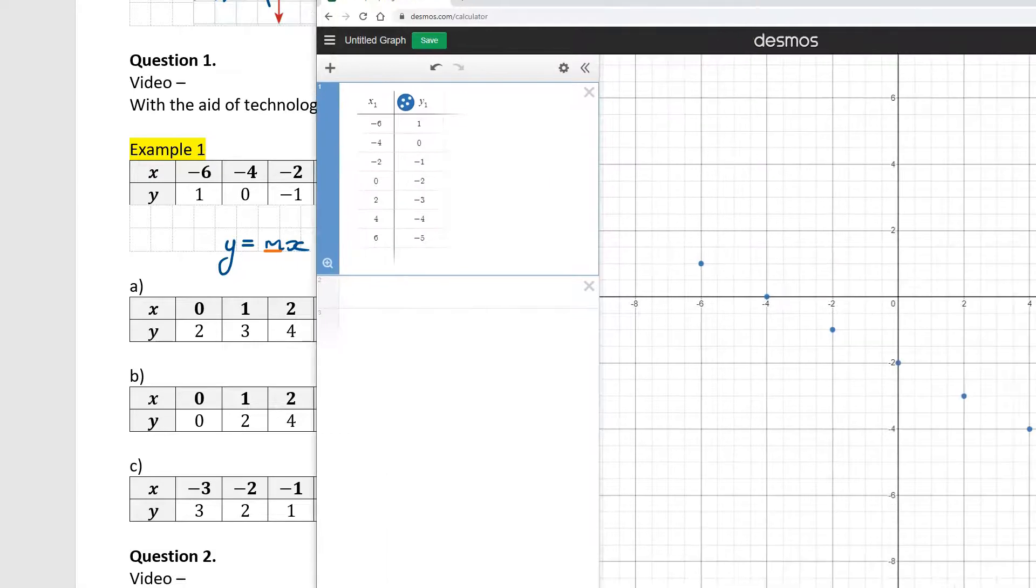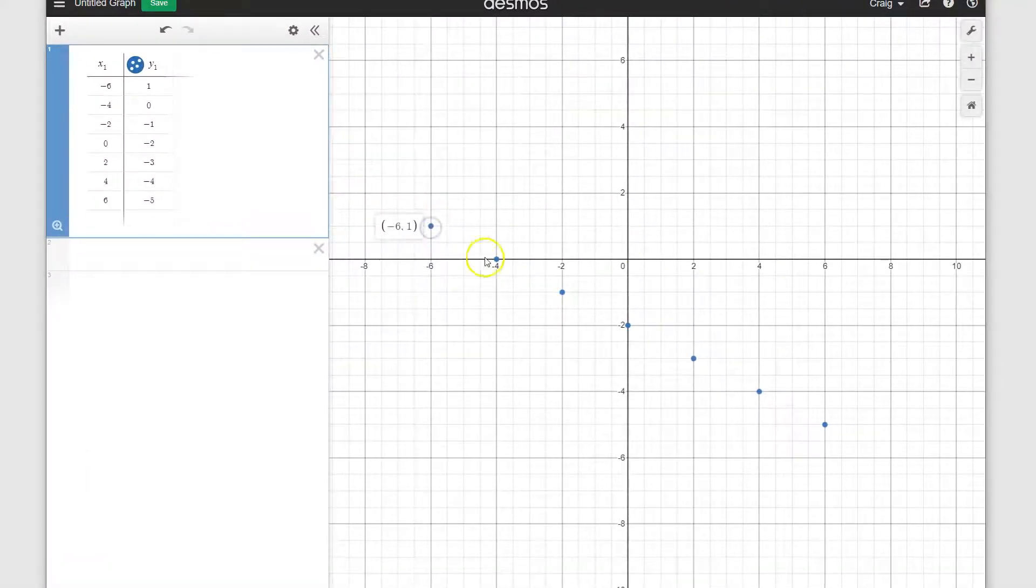All right, the points are in. And what we can see is that these points here, they all sort of line up such that you could draw a straight line through it. So that's going to be our next step.